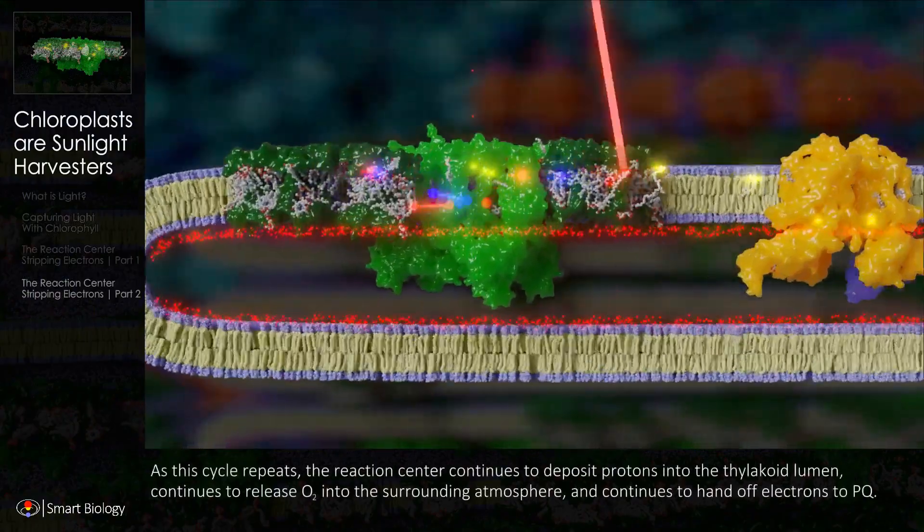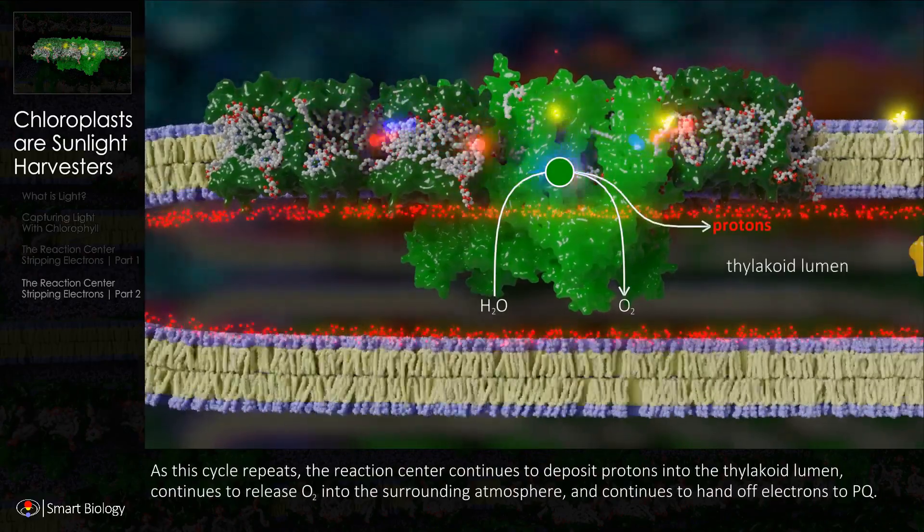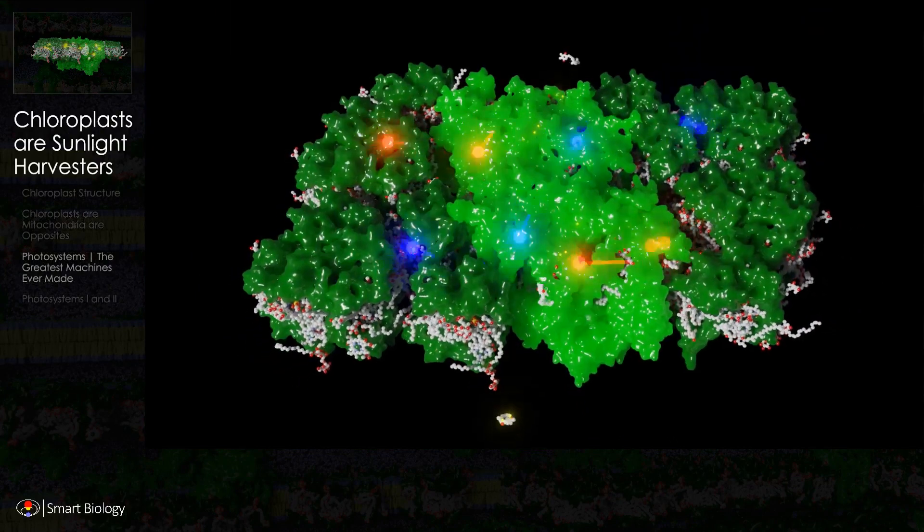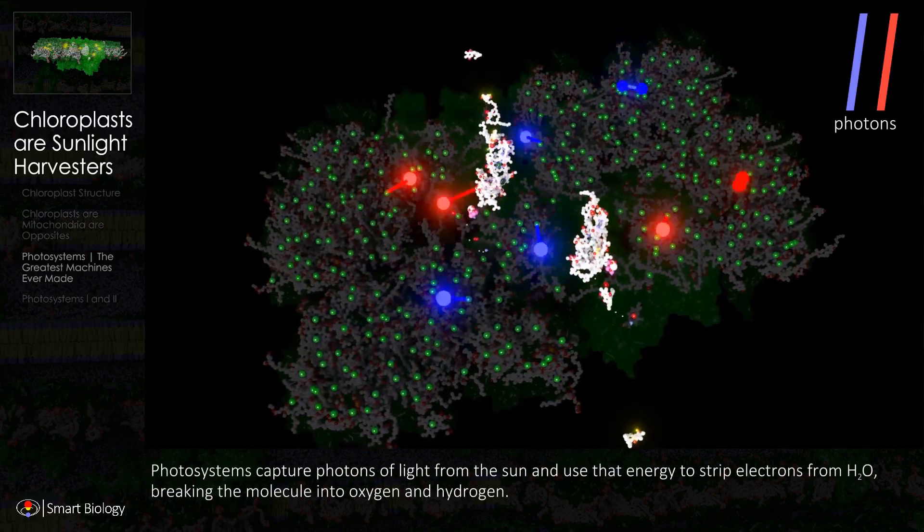As this cycle repeats, the reaction center continues to deposit protons into the thylakoid lumen. Photosystems capture photons of light from the sun.